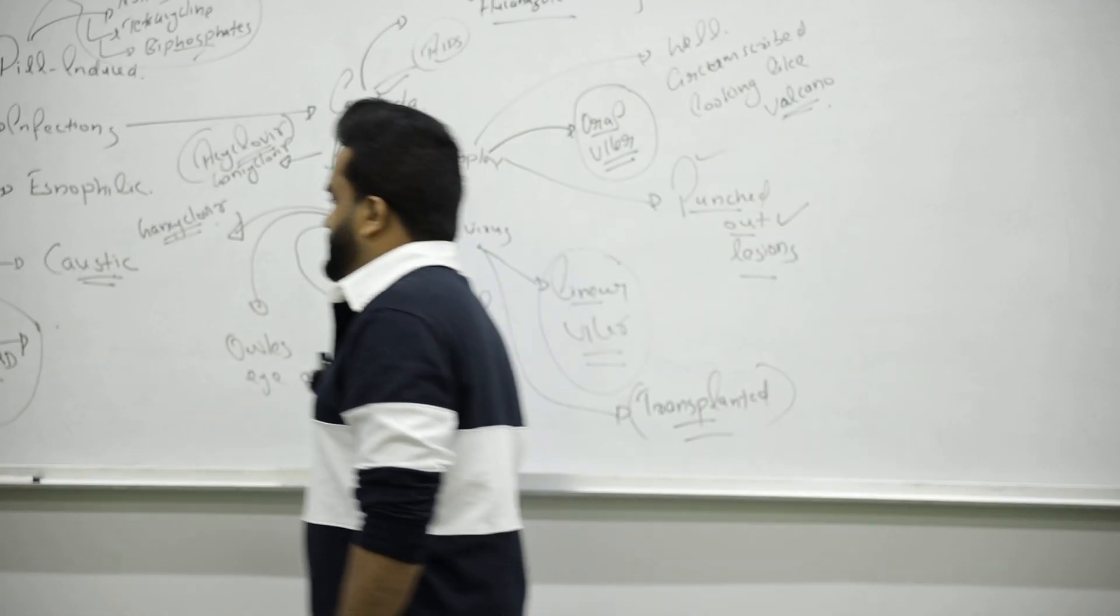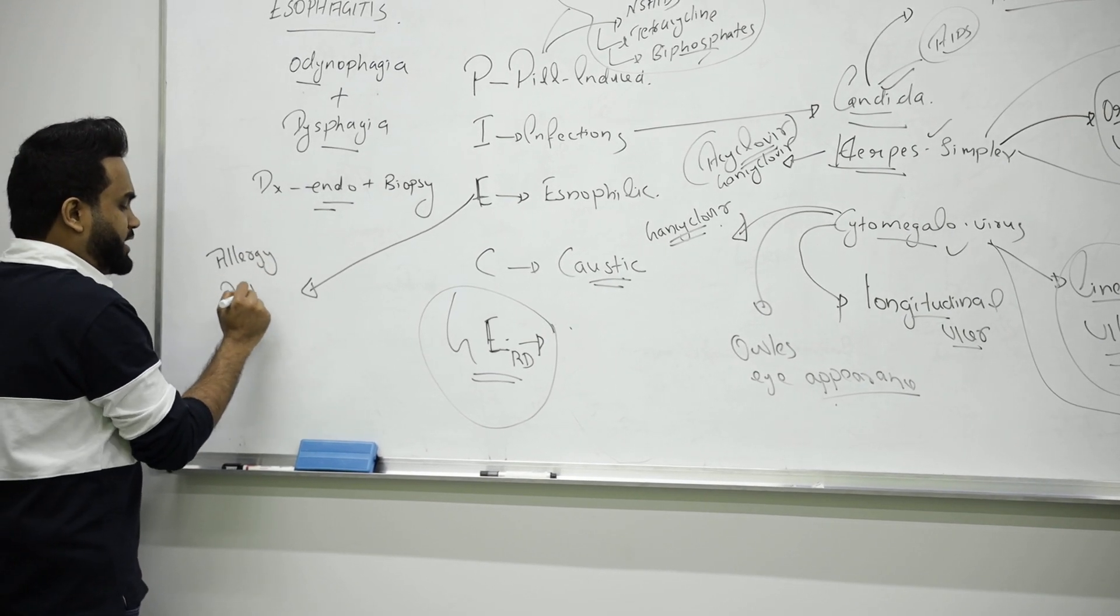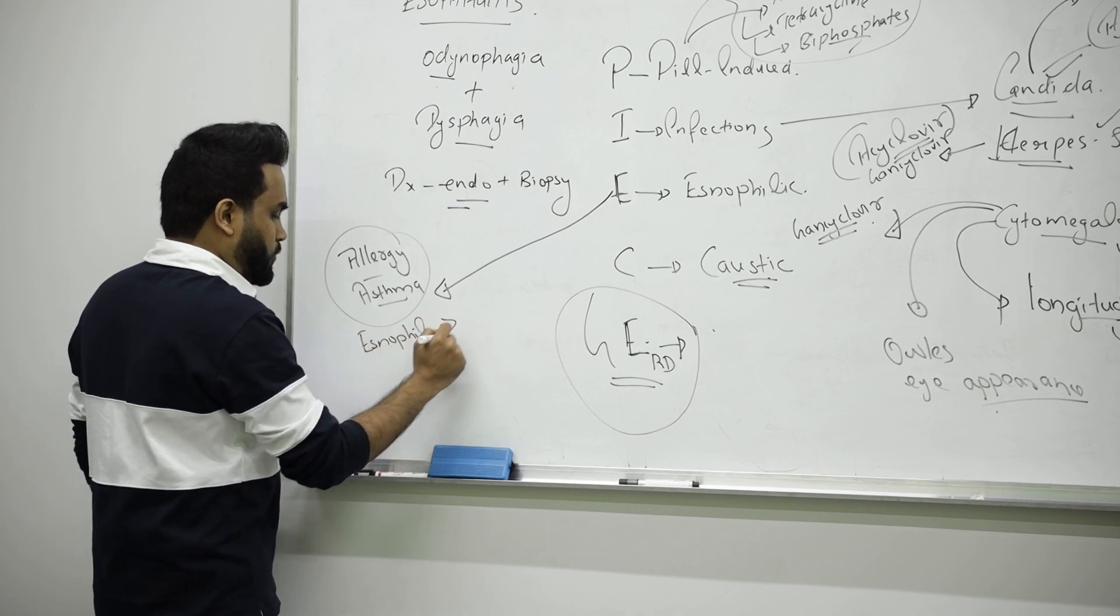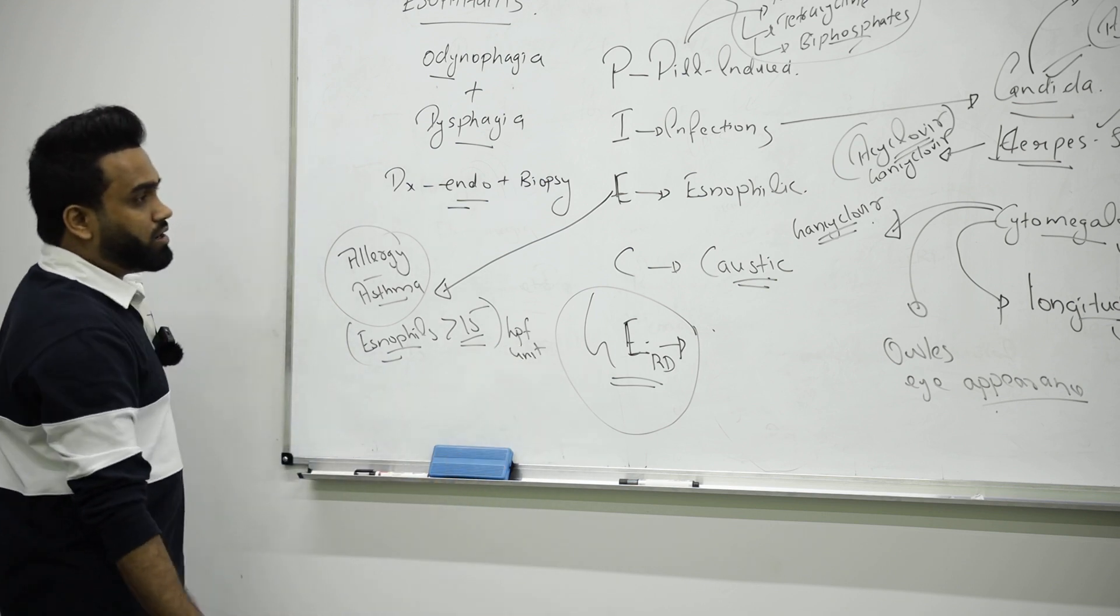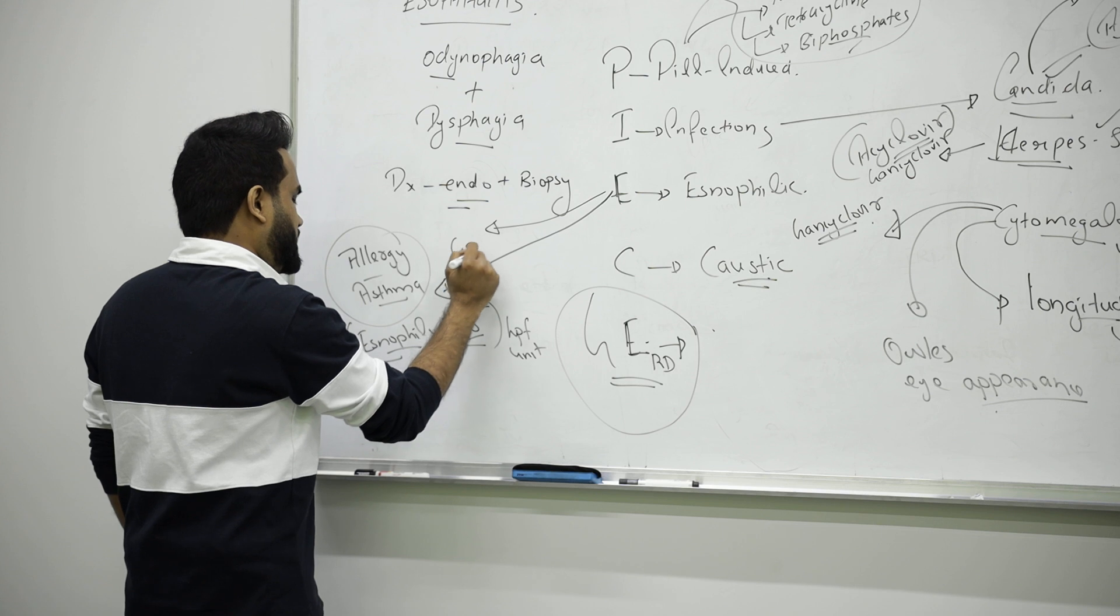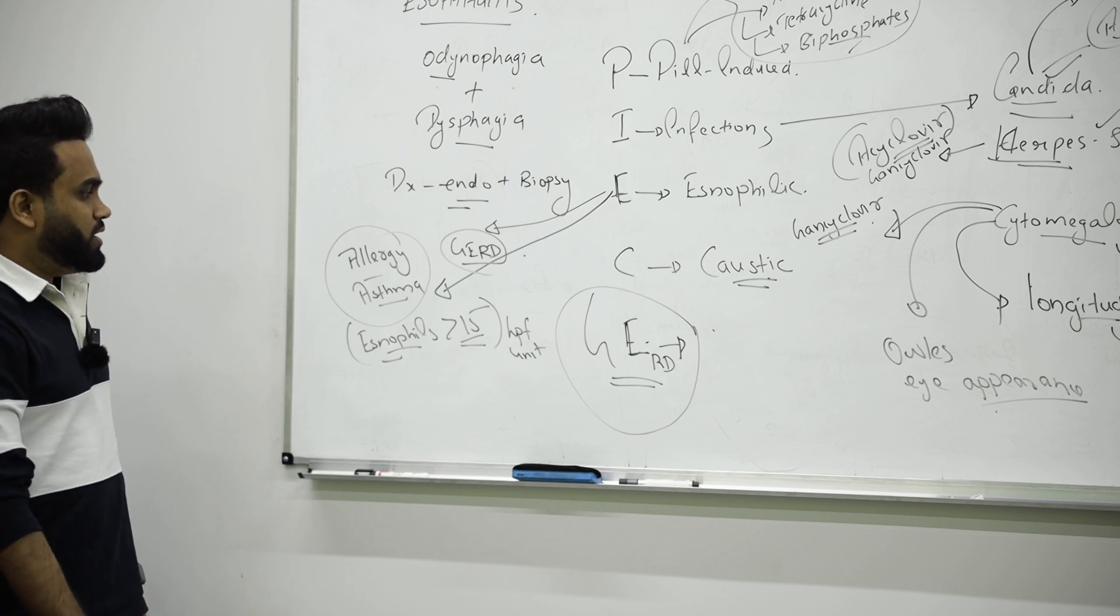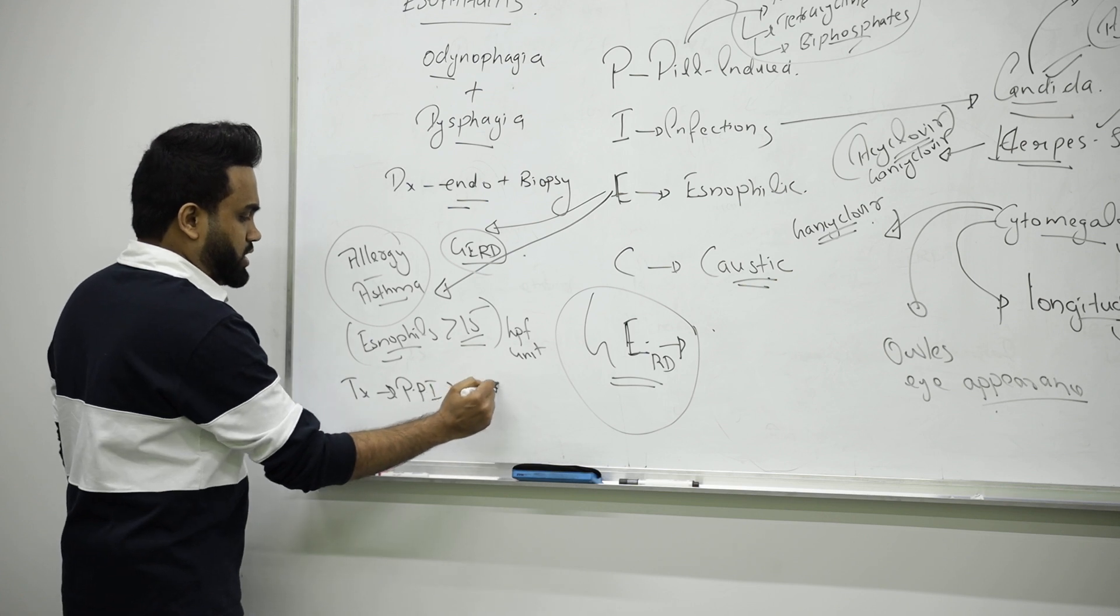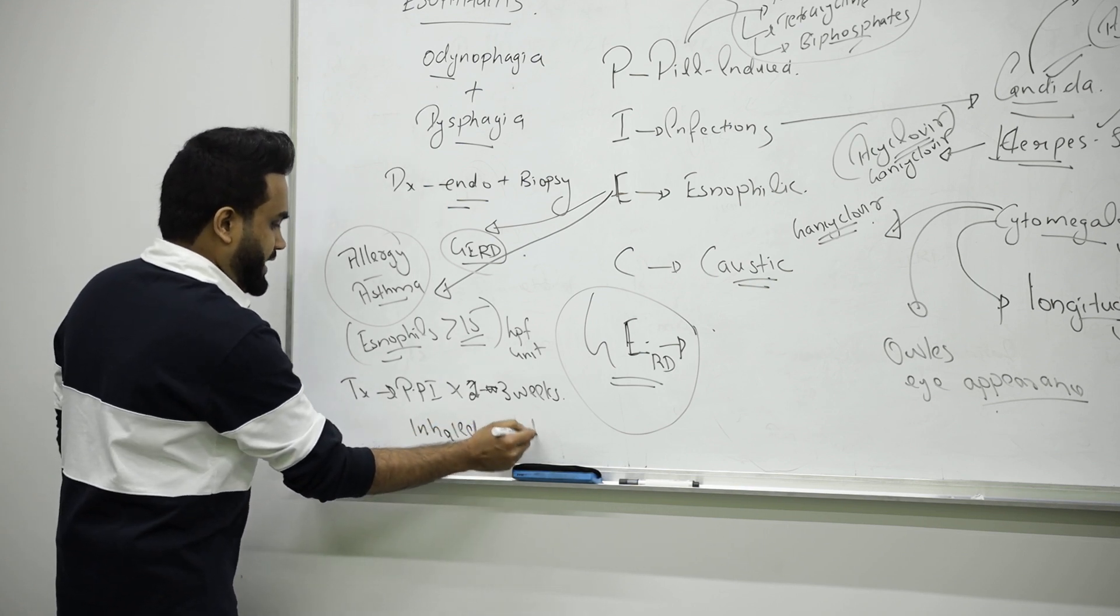Next one is about eosinophilic esophagitis. Of course it is because of allergy. Patients who are having history of asthma and all - remember IgE, you will see eosinophils more than 15, more than 15 per HPF unit. It can also come as eosinophilic as a complication of GERD - complication of gastroesophageal reflux disease. You can give PPI, proton pump inhibitor, for one week or two to three weeks, and to suppress the eosinophils I can also give inhaled steroids.